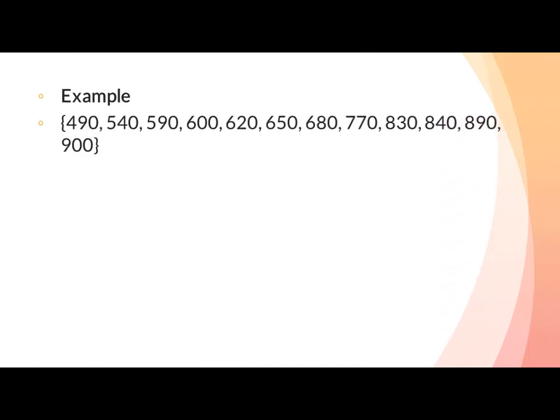Example: find the quartile of this data set — 490, 540, 590, 600, 620, 650, 680, 770, 830, 840, 890, and 900. Now we will calculate how many values are present in this data set.